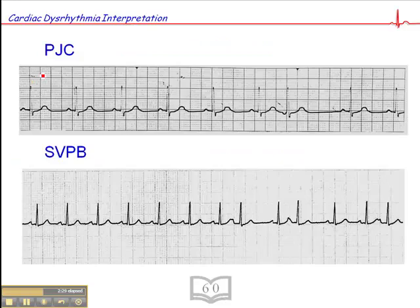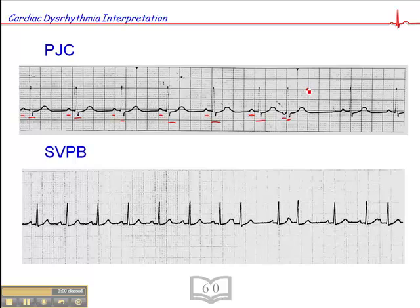Here are some examples of premature junctional complexes. We have normal P-wave and QRS complexes in sequence, then here we have an inverted P-wave and a QRS. If you look at the R-to-R interval, this beat with the inverted P-wave happens earlier than the next expected beat — so this one happens prematurely. It has an inverted P-wave, which makes it junctional. So this is a premature junctional complex.